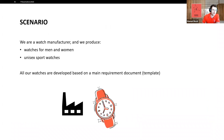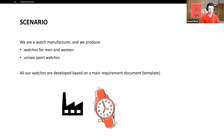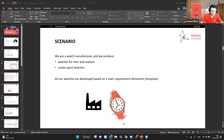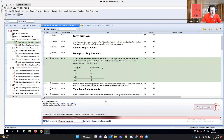Let's look at the scenario we'll use in this webinar. Imagine we are a watch manufacturer producing watches for men, women, and unisex sports. All our watches are developed based on a main requirement document — a template — and each project for a new watch is just a branch of this main requirement document. Imagine you are the head requirements engineer and your stakeholders ask which changes exist in the requirement document, so you must calculate the difference.